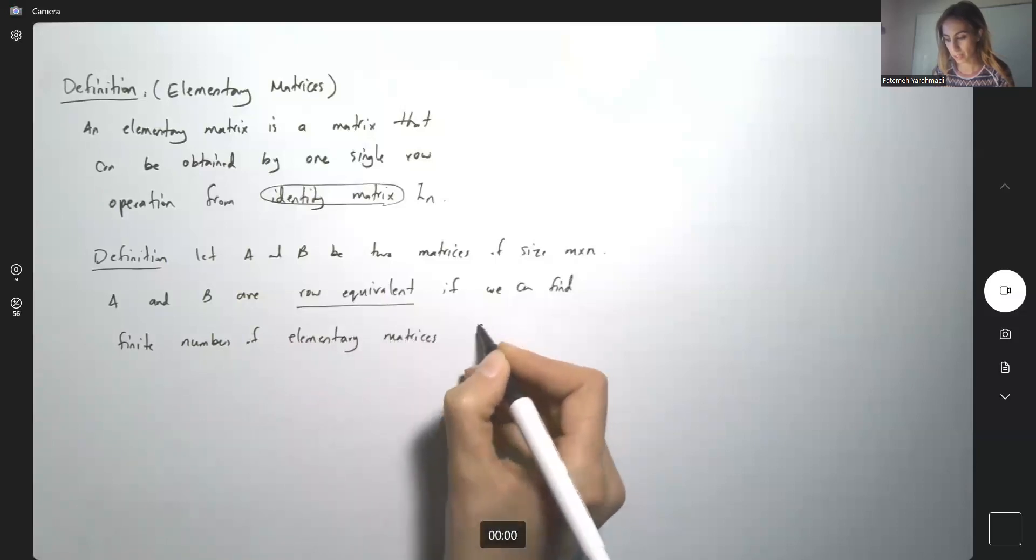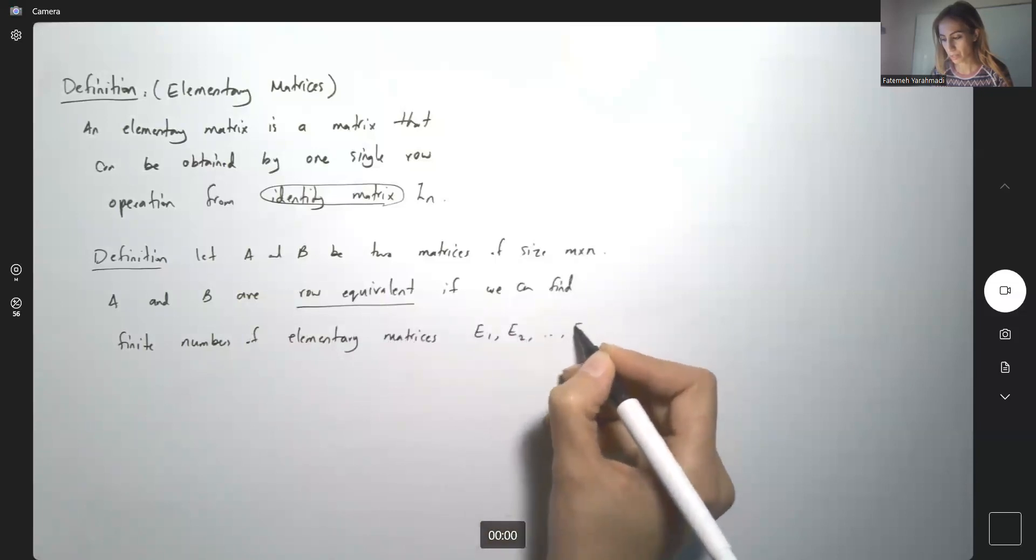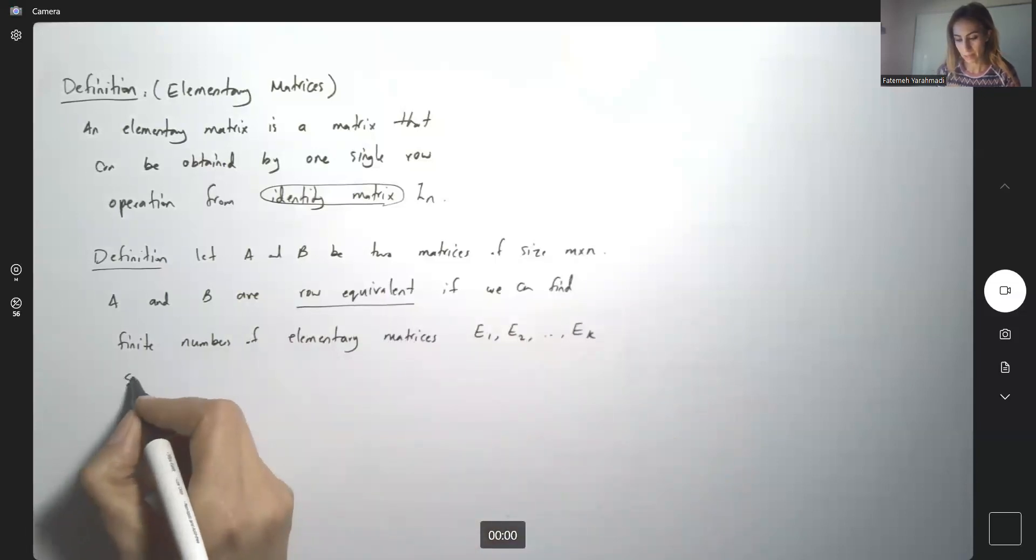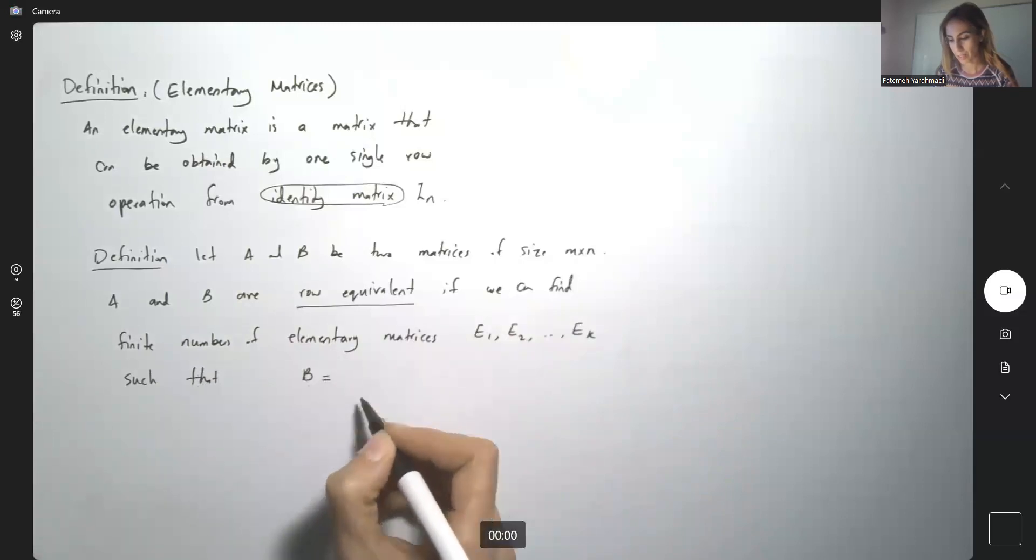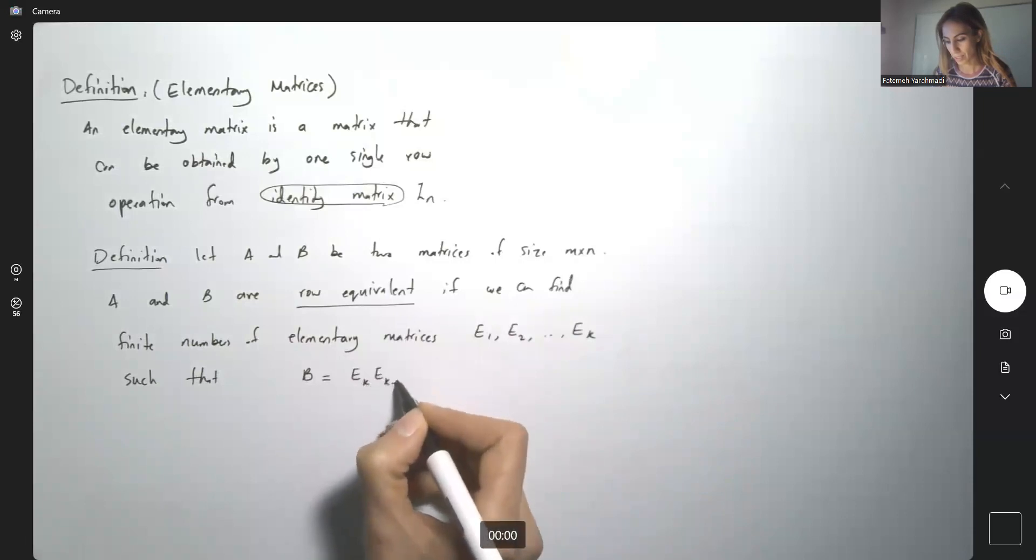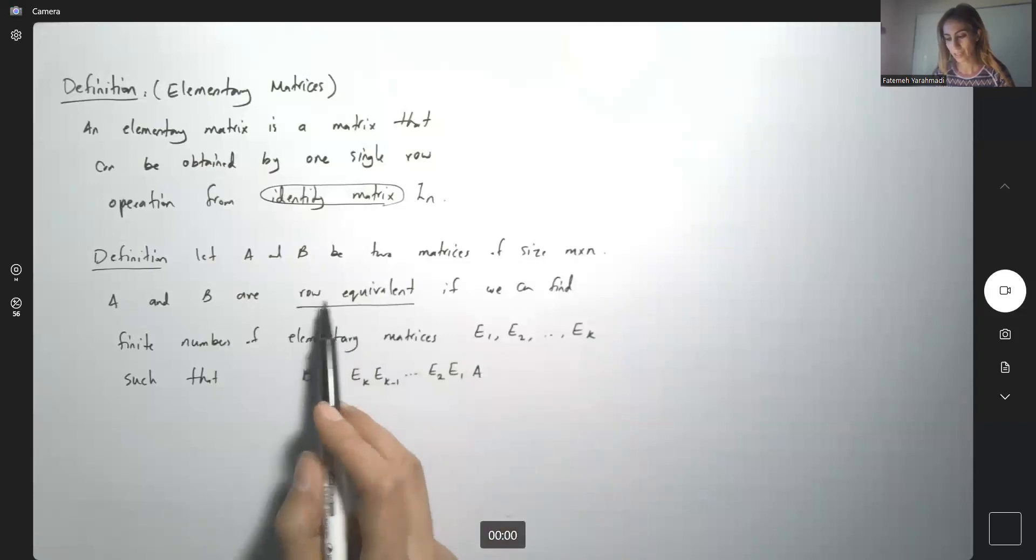Like E_1, E_2, E_3, ..., E_k such that B can be written as E_k times E_(k-1) times E_2 times E_3 times E_1 times matrix A. So in this case, we say that A and B are row equivalent.